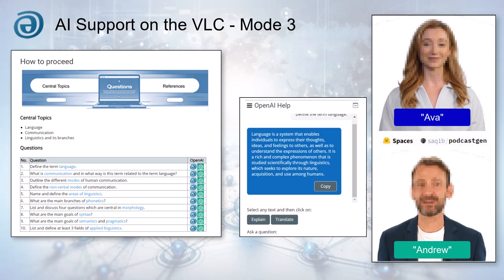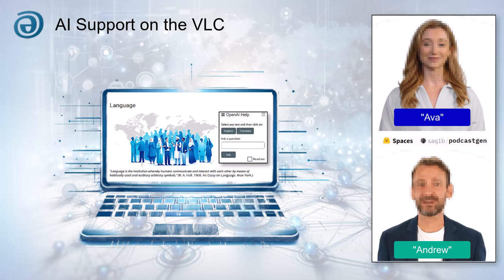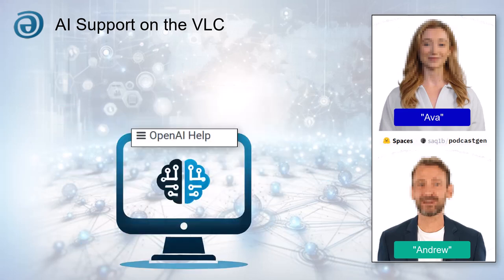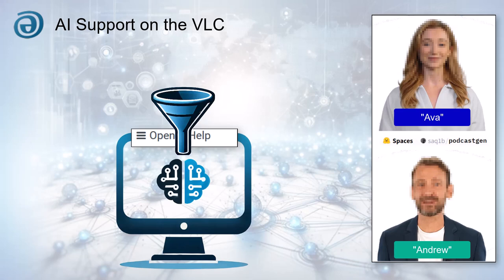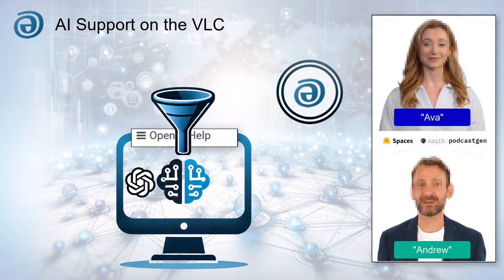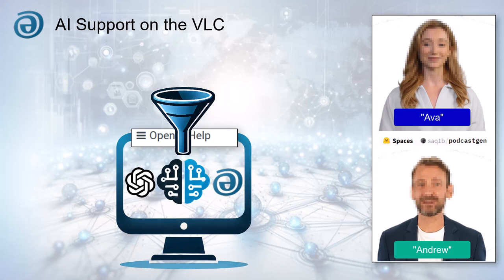This all sounds very impressive, but how does VLC ensure the accuracy and relevance of the AI-generated responses? All answers are based on OpenAI's General Knowledge Database, combined with content embeddings from the specific VLC course. This ensures that the AI's responses are relevant to the learning material and accurate.